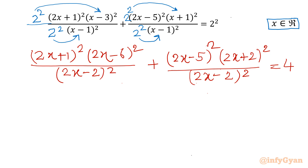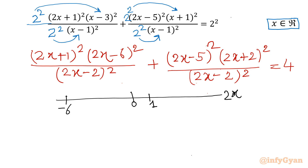Now I will consider averaging. If I draw a number line with 2x as the axis origin, I can mark the relevant values: 2x+1 is +1, 2x-6 is -6, 2x-2 is -2, 2x-5 is -5, and 2x+2 is +2. I will find the middle point — the averaging of all these values — to determine what substitution to take.